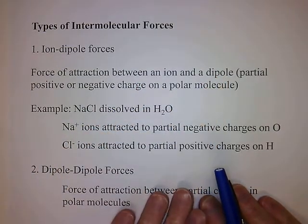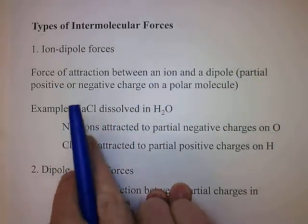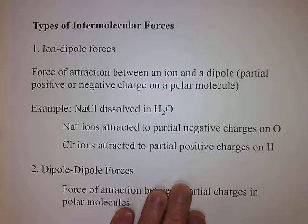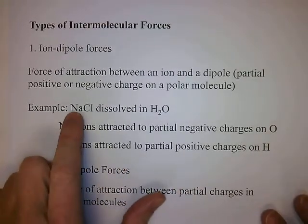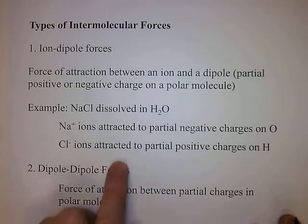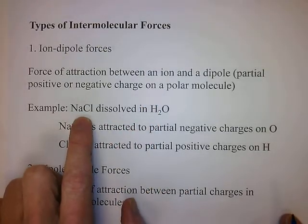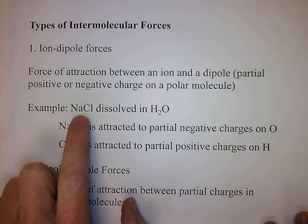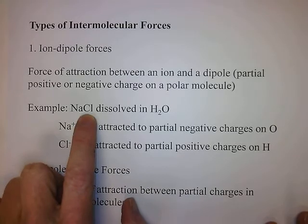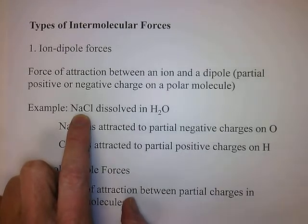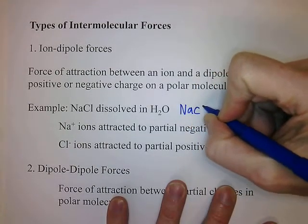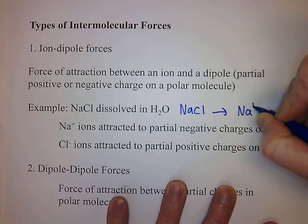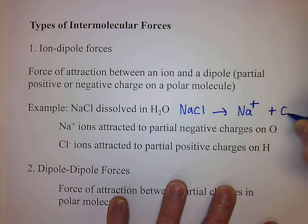What's a dipole? A dipole is a partial positive or negative charge on a polar molecule. An example is salt dissolved in water. You may recall from Chem 1 what happens to ionic compounds when they dissolve in water — they dissociate. The crystal lattice comes apart and the salt dissociates into separated sodium ions and chloride ions, and that's how it exists in solution.